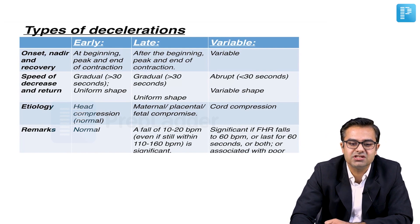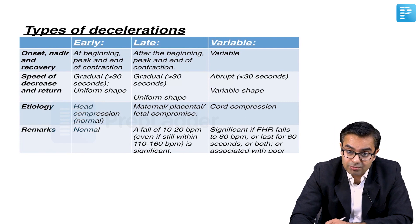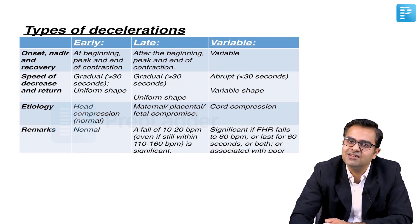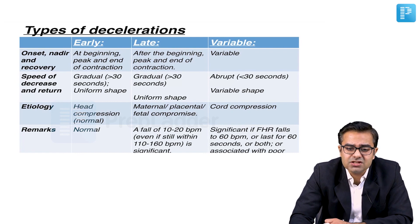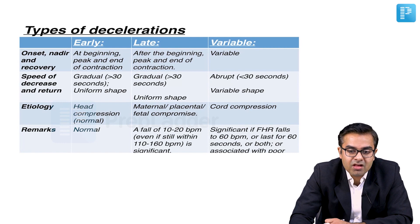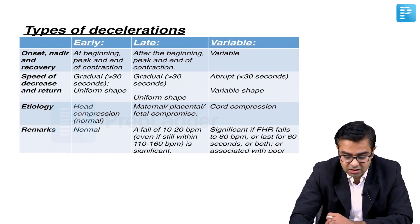The etiology of early deceleration is head compression — that is normal. Late deceleration is not a good sign; it can happen because of maternal, placental, or fetal compromise. Variable decelerations are because of cord compression. Some special points: early decelerations are absolutely fine, normal, and reassuring. Late deceleration — even a fall of 10 to 20 beats per minute, even if still within 110 to 160 beats per minute, is significant. Variable deceleration is significant if fetal heart rate falls to below 60 beats per minute, or they are lasting for 60 seconds or more, or both — and that is associated with poor outcome.